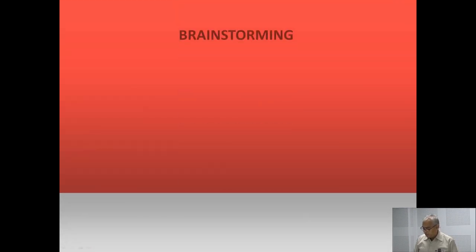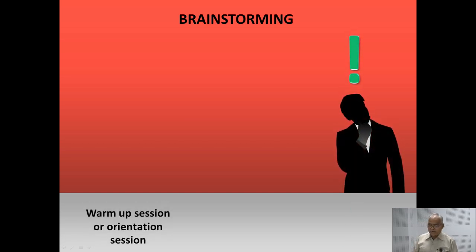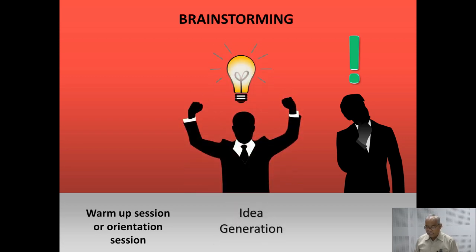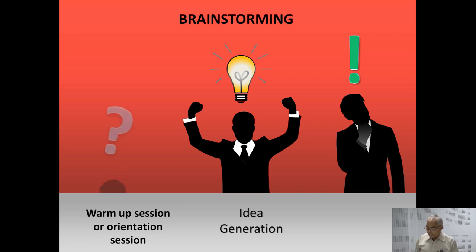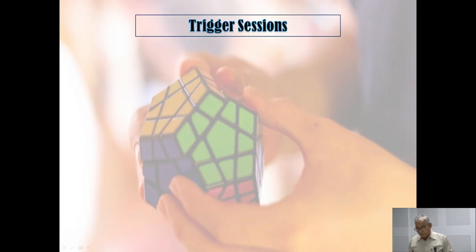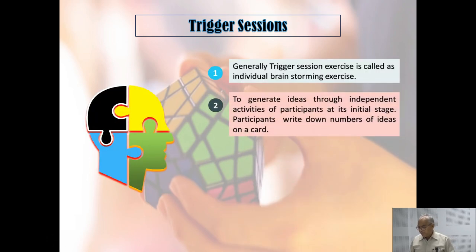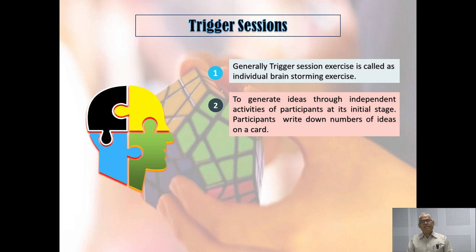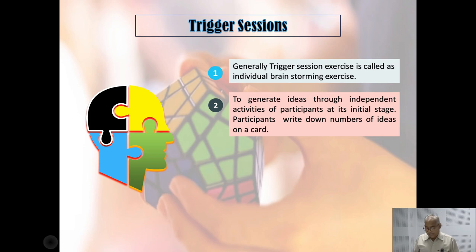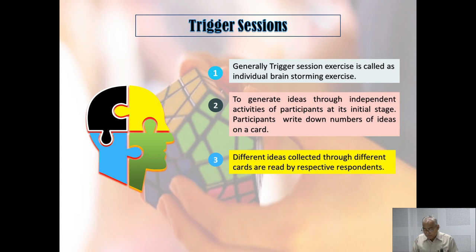There are different sub-procedures of brainstorming sessions, included in warm-up sessions, idea generation sessions, and sessions for evaluating and progressing ideas. One sub-procedure is the trigger session, generally called the individual brainstorming exercise. We request that as many ideas come to your mind, you write them, record them, or verbally express and record them in your mobile phone, then generate and collate and classify those ideas.